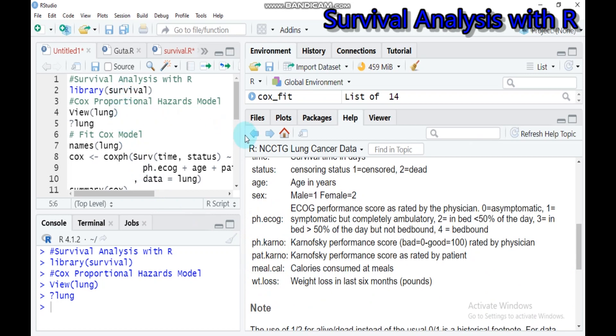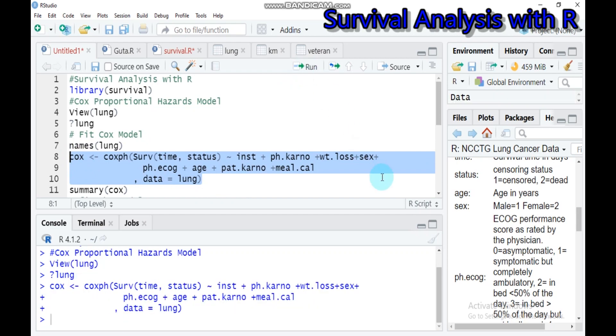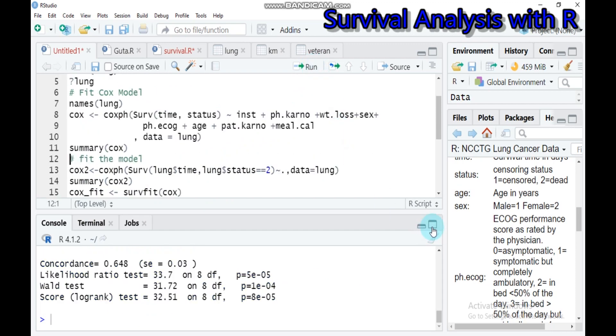I will fit the Cox proportional hazards model using the coxph function. Here the survival function helps us to do that. Time, you have to indicate here is time and it's followed by status and all the remaining things are the other covariates. One advantage of Cox proportional hazards model is it can do analysis for both univariate and multivariate. You have to indicate your data name equals lung. Type this and submit to your studio, then you will get a result by typing the summary.